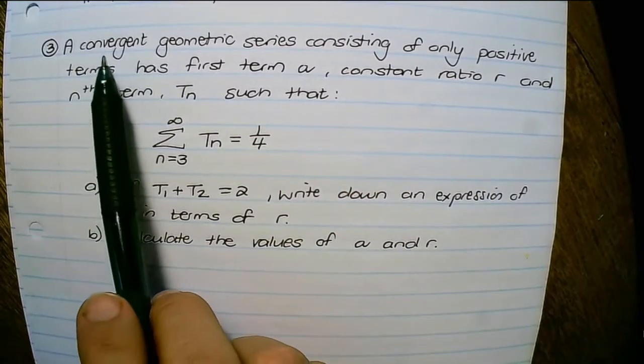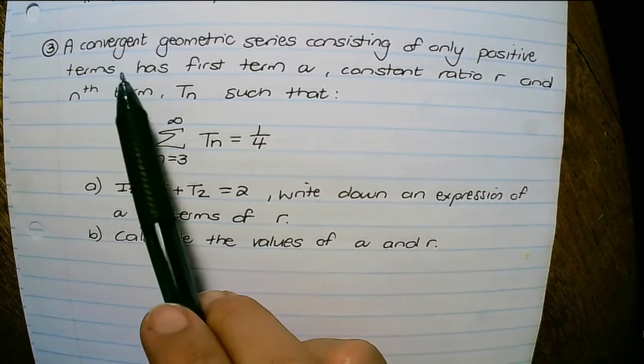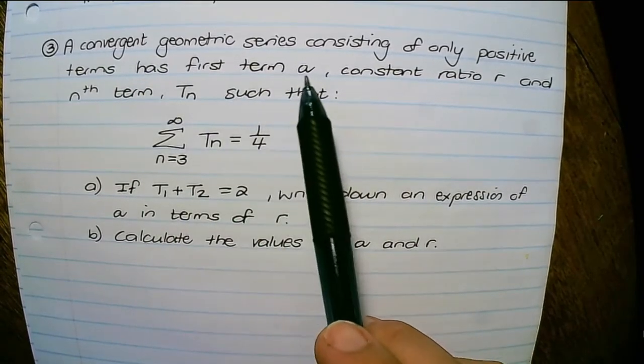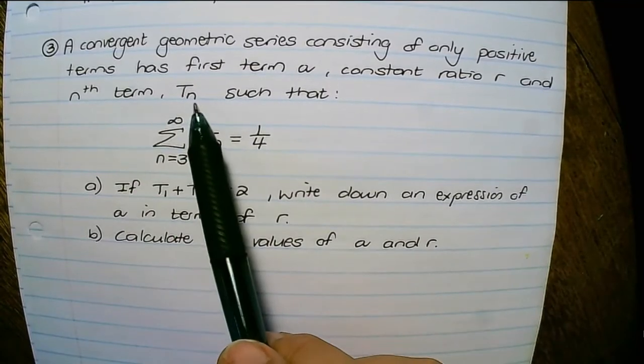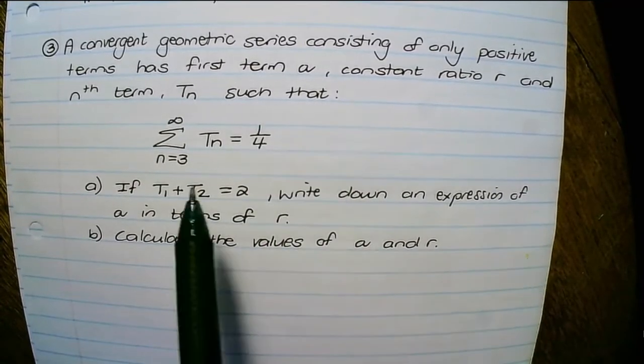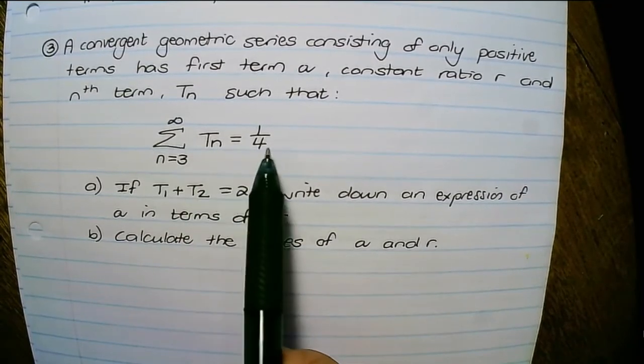Now next question, we have a convergent geometric series consisting of only positive terms with first term a, a constant ratio r, and the nth term tn such that the sum to infinity equals a quarter.